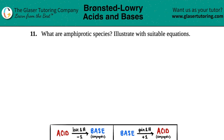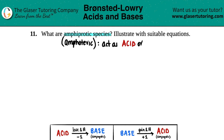Question 11: what are amphiprotic species? Illustrate with suitable equations. This is a definition question. Amphiprotic — you might know this as amphoteric. Amphoteric, amphiprotic — tomato, tomato. These types of species basically can act as either an acid or a base, so they are either ions or molecules that can act as either an acid or a base in certain situations.